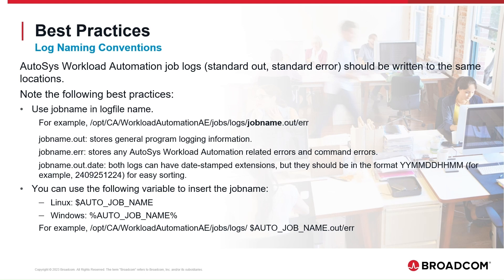Log Naming Conventions: Autosys workload automation job logs — the standard out and standard error — should be written to the same locations. The job name should be used in the log file name. The job name dot out file will store the general program logging information. The job name dot error file will store the Autosys-related errors and command errors. Both logs can have date-stamped extensions in the format: year, month, day, hour, and minute for easy sorting.